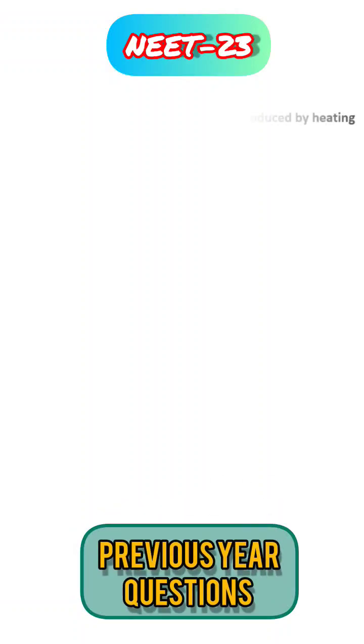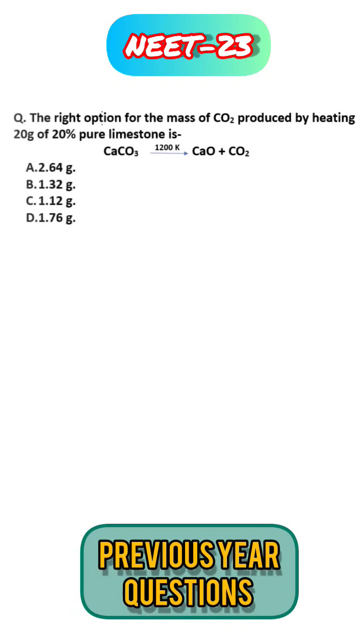In this problem you have to find out how much carbon dioxide is produced by heating 20 grams of 20% pure limestone. The reaction is given as CaCO3 on heating gives CaO and CO2.